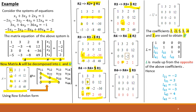We move to the next column, where the pivot element is equal to minus 2. Using this pivot, we will make the element 2 equal to zero. By applying row operation R4 plus R3, the third element of the fourth row becomes equal to zero. This gives us our upper triangular matrix U, and we can observe that all elements below the diagonal are zero.